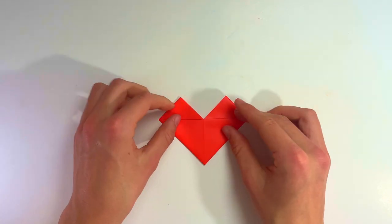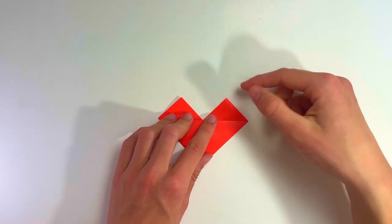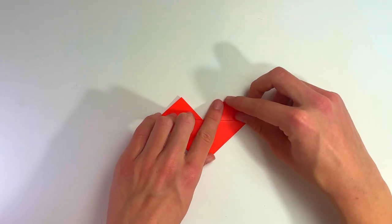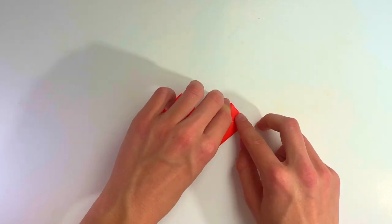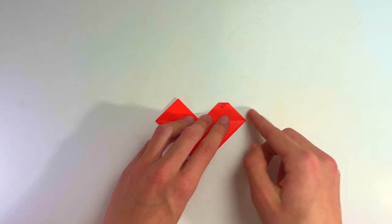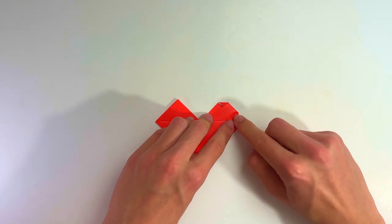Flatten. Now we're going to fold this point downwards just a little bit. There's no reference point—it's just to taste, really. We're just making the heart a bit more round. Now do the same thing on the right point here. Just bring it inside to soften the corner a bit.